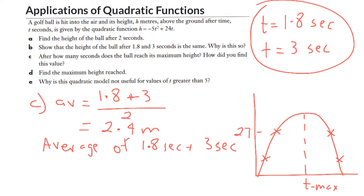So part d, find the maximum height. Well, we just need to substitute in t equals 2.4. t equals 2.4 seconds. We'll write in our substitution here. h equals minus 5 times 2.4 squared plus 24 times 2.4.